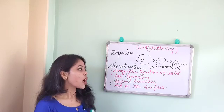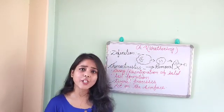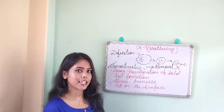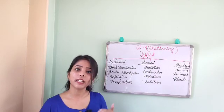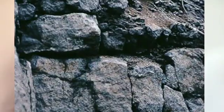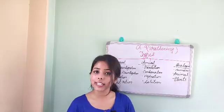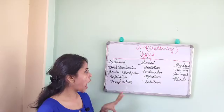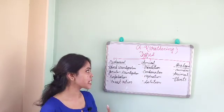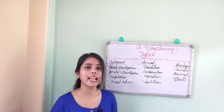Now we will discuss the classification — what are the types of weathering that take place on the surface of the earth? Number one is mechanical or physical weathering. Number two is chemical weathering. And last is biological weathering. We will discuss all three one by one.